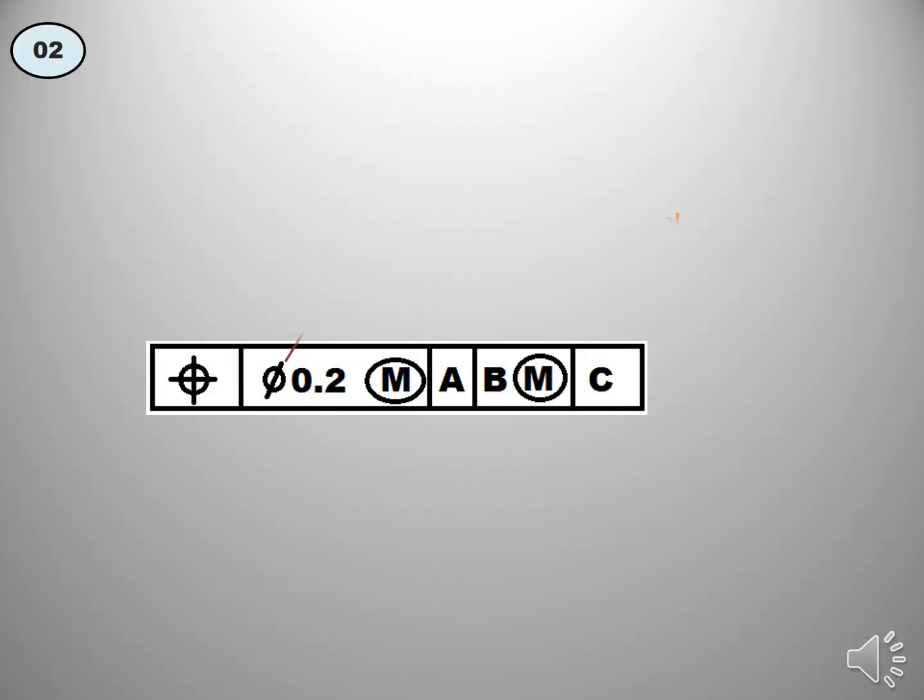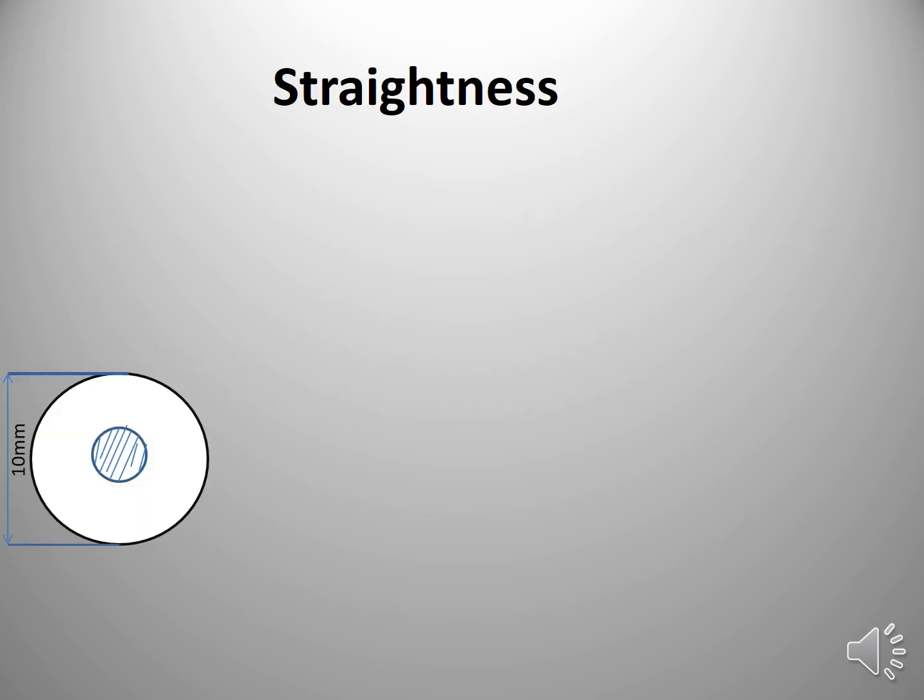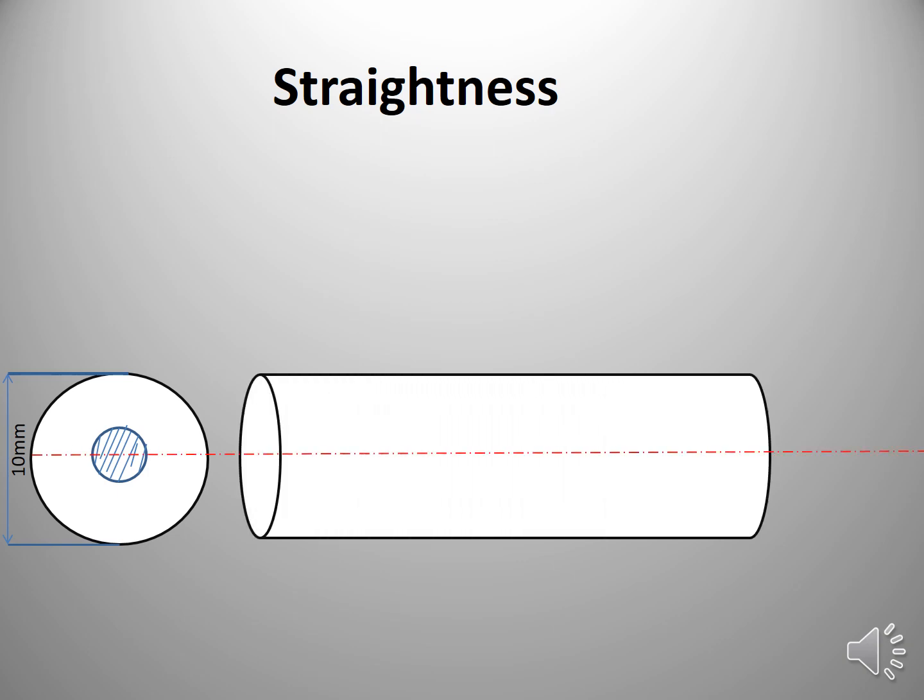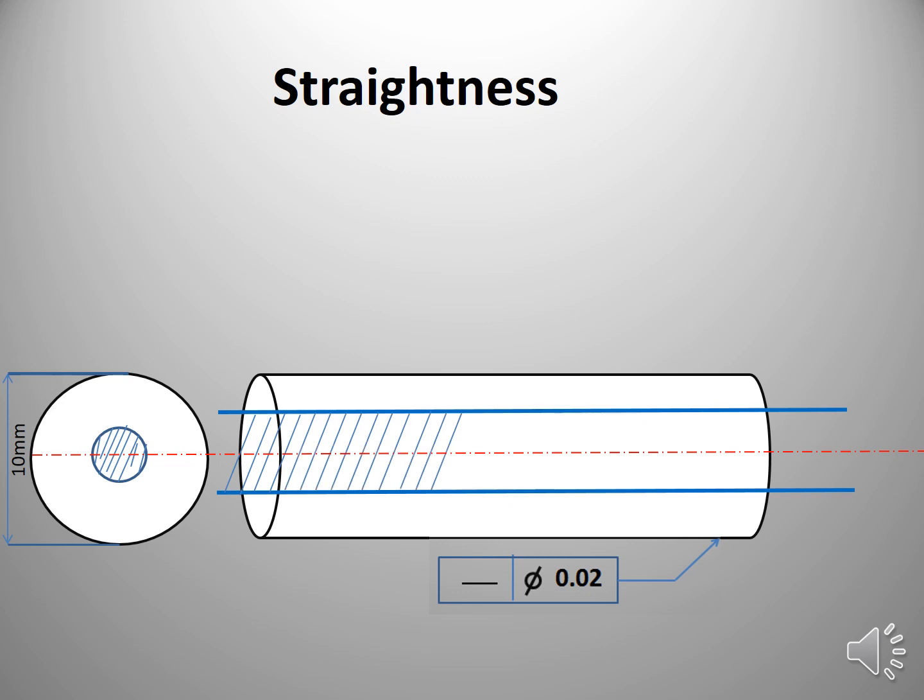Next is numerical tolerance. Let us try to understand one by one. First one is straightness. Here we can consider a cylinder which required a straightness of 0.02. This means that the straightness should be within this tolerant zone.